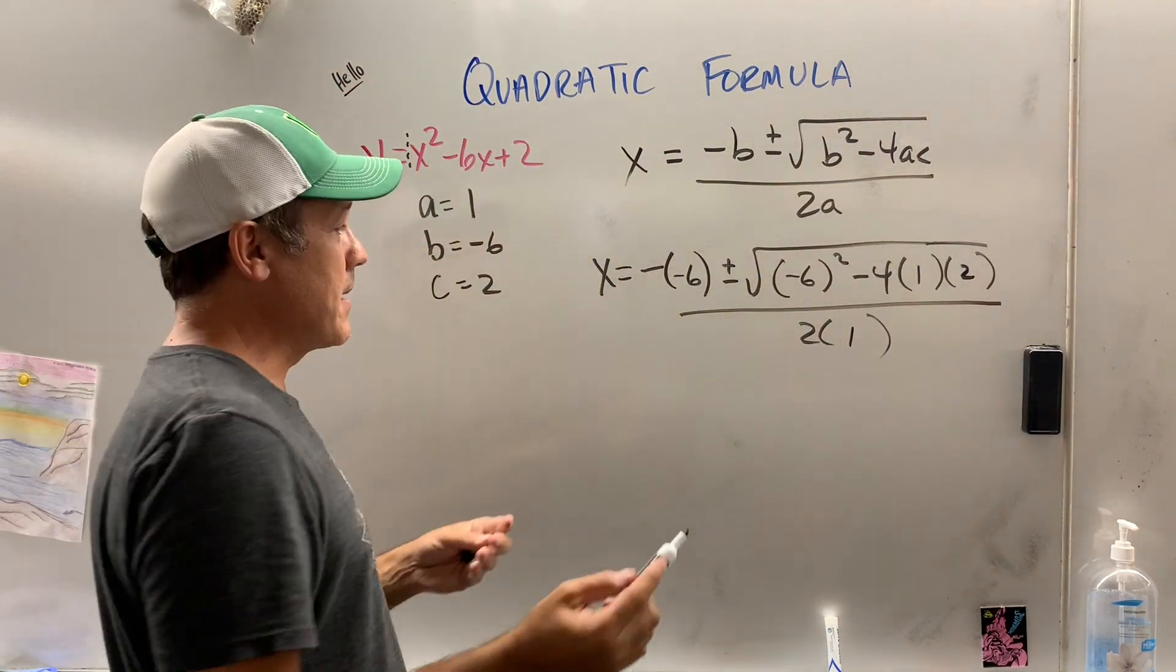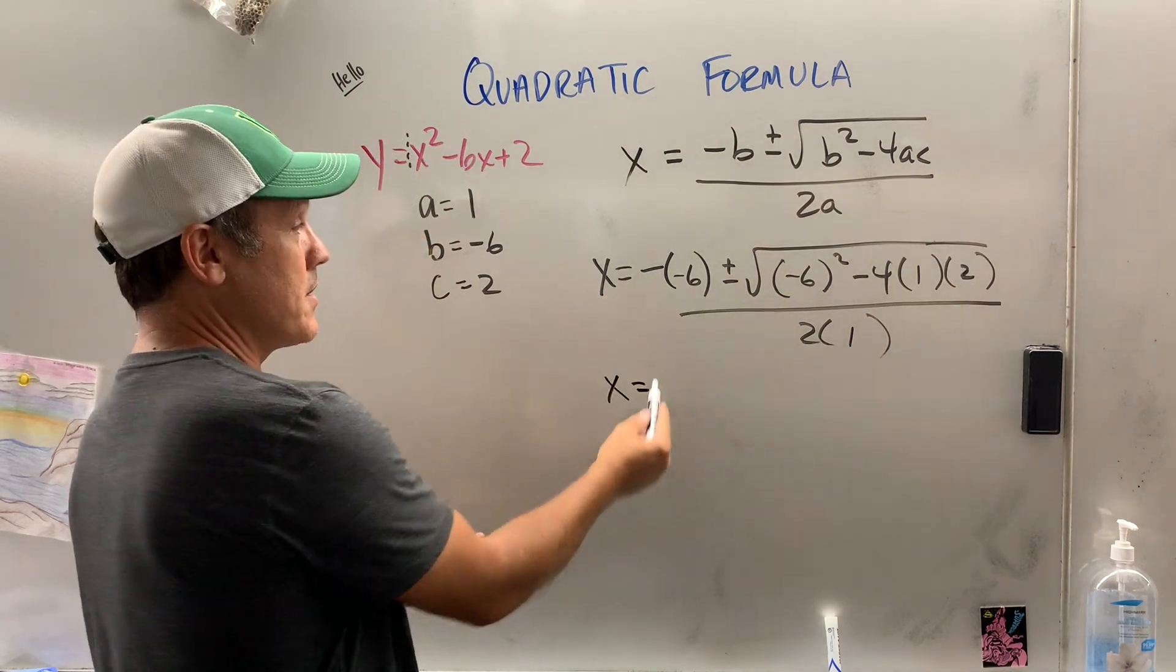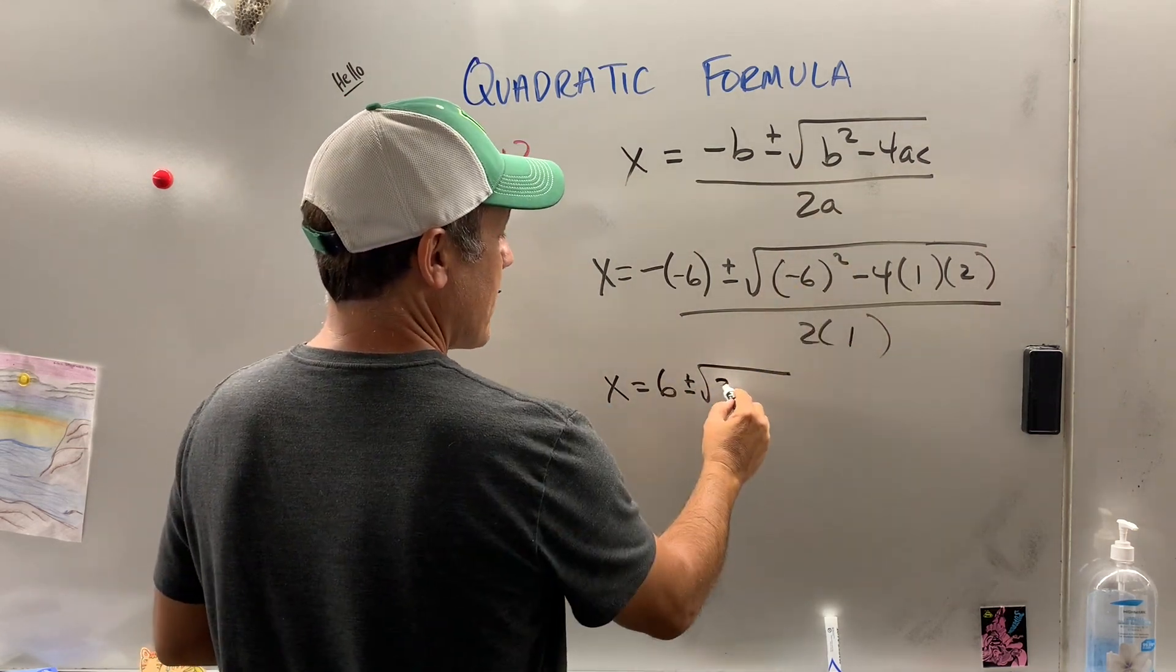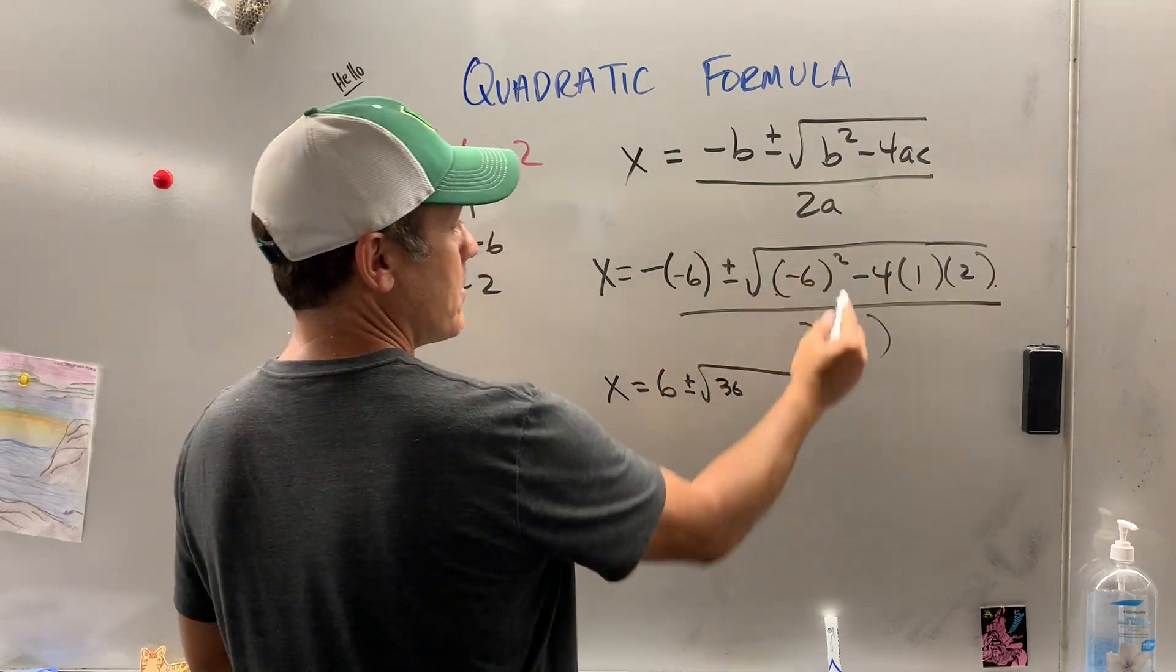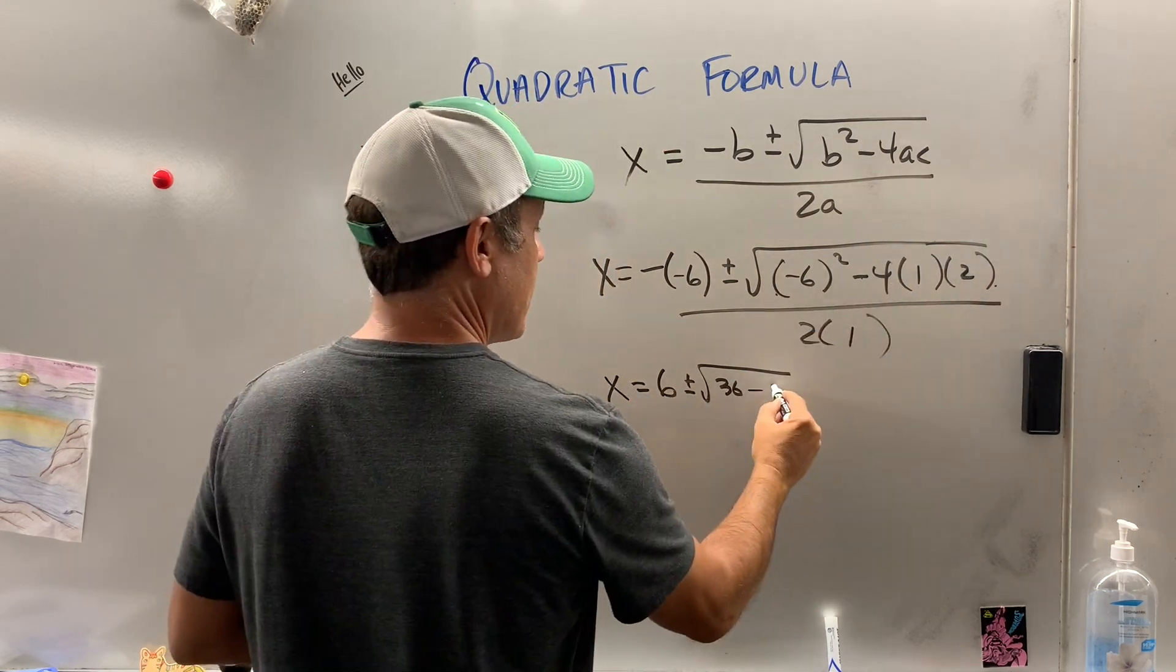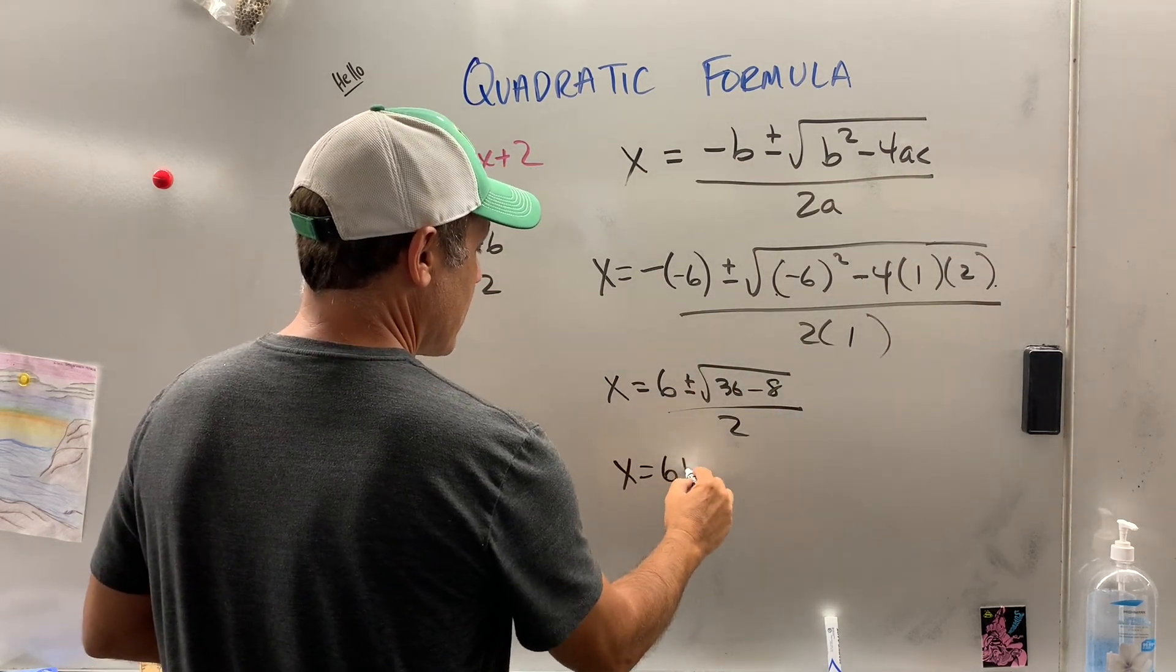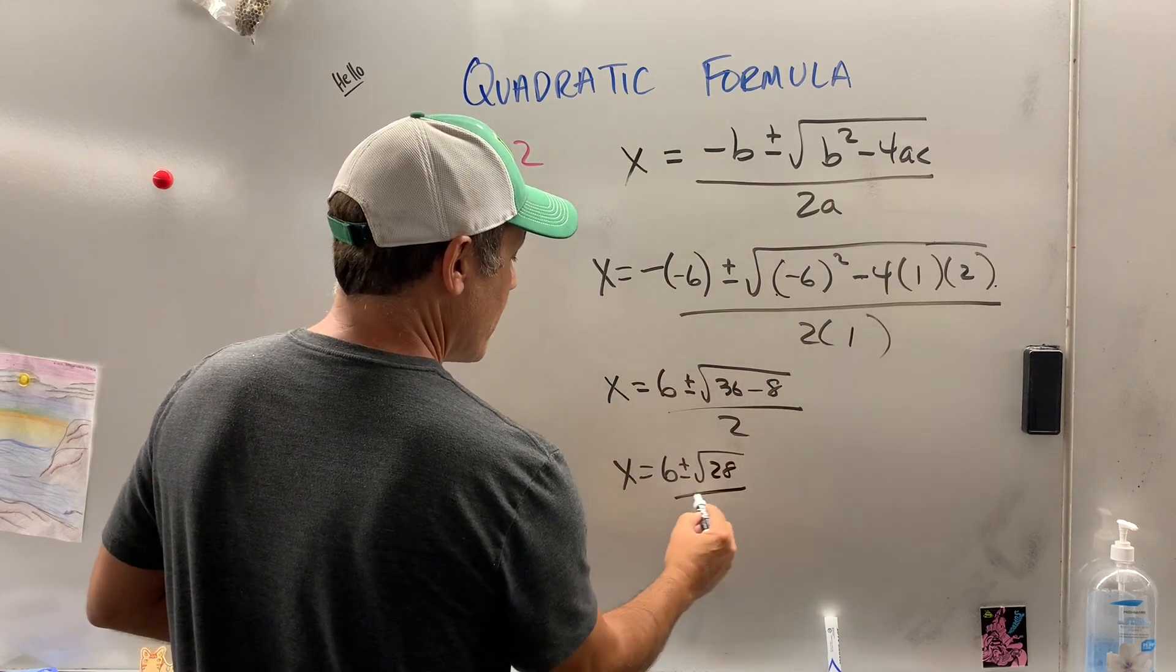Now it's just basic computation. x equals, keep bringing that x equals down. Two negatives make a positive. Plus or minus. This is 36. Again, you can go from here to there if you have a good calculator, but I'm going to do it the old school way. Negative 4 times 2 is negative 8 times 1, so we get negative 8 all over 1 times 2 is 2. x equals 6 plus or minus, what is that, 28 over 2?